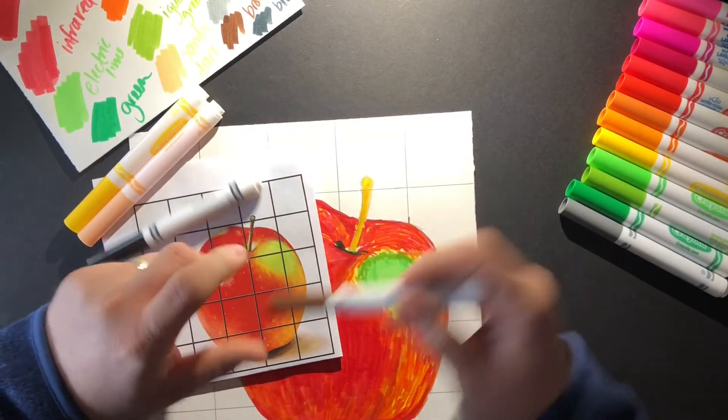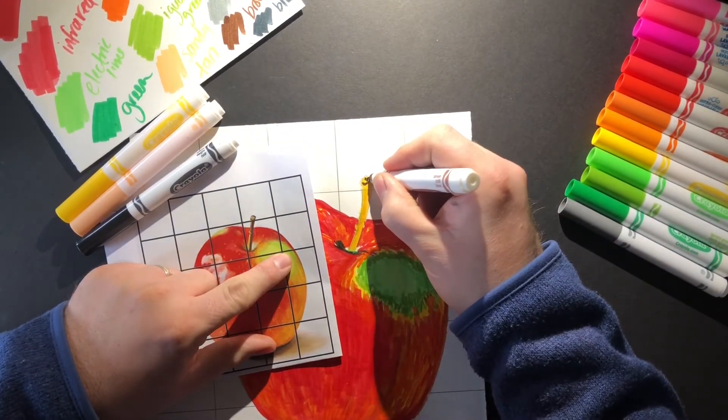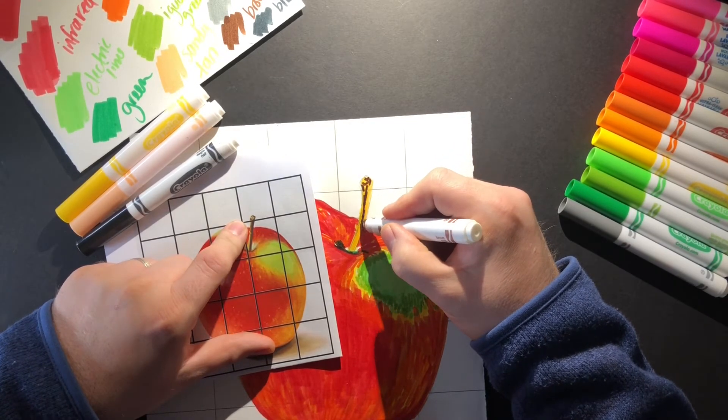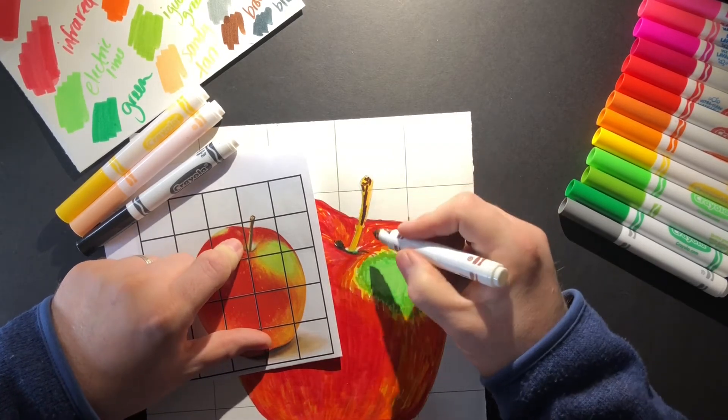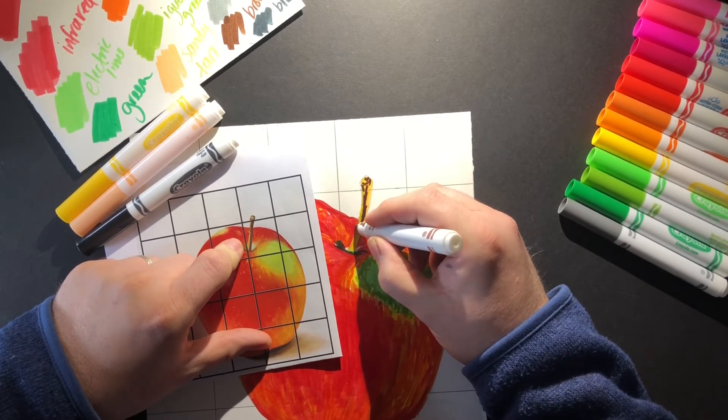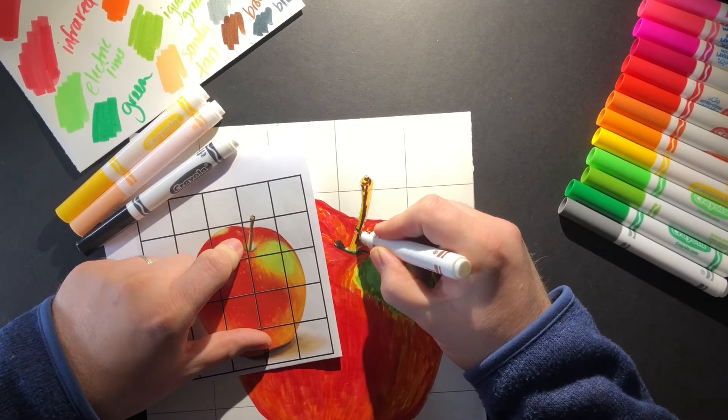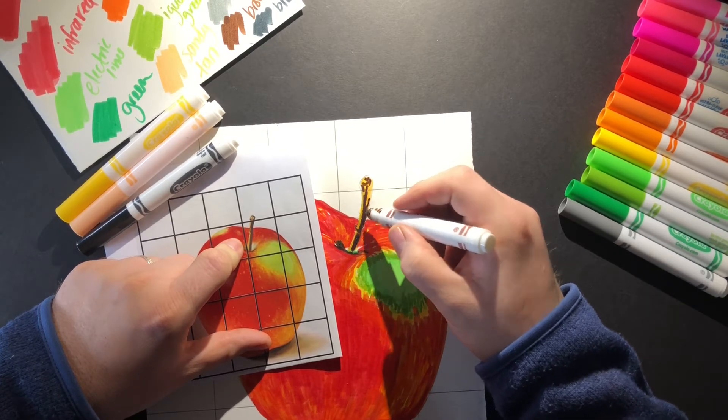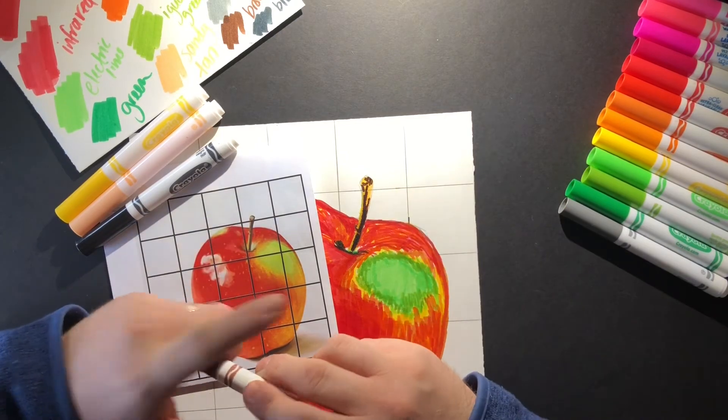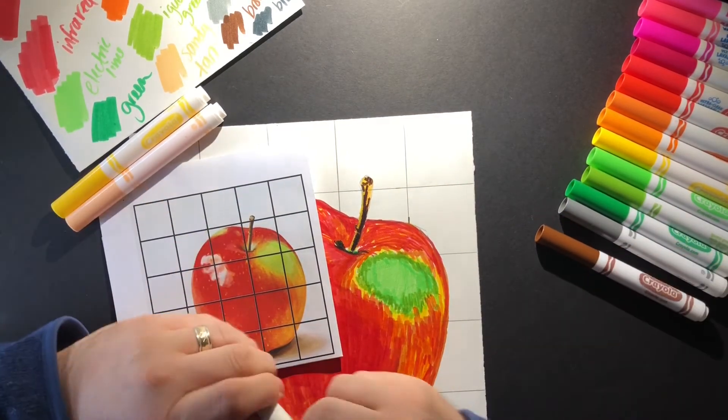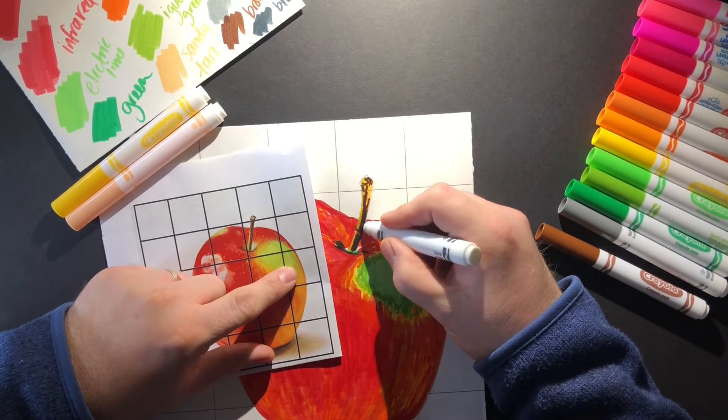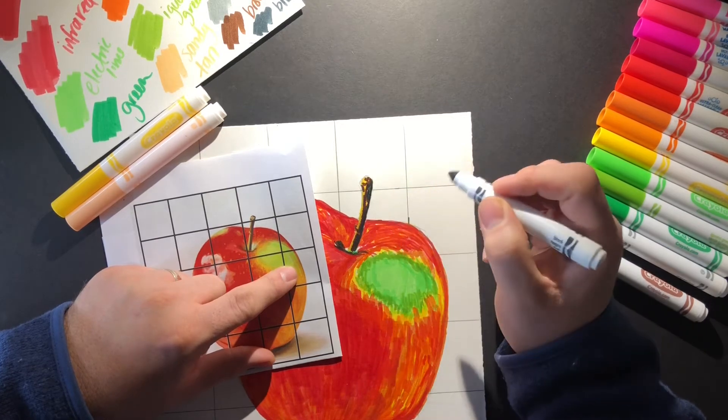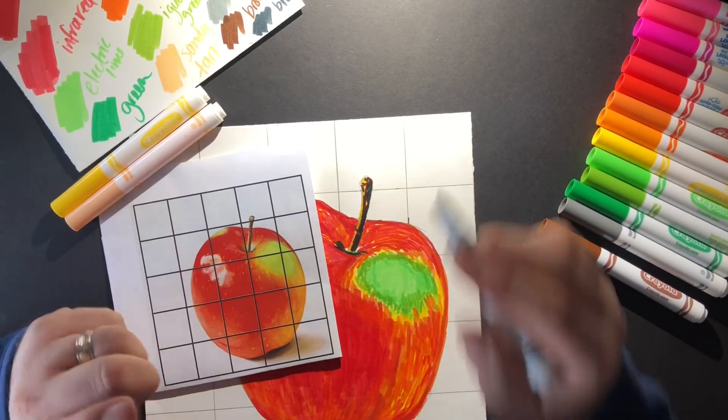Then I'm going to go back with my brown on the stem part. I'm trying to leave that yellow on the left side, which is where the light source is on the left side of the apple. And then finally, let me go back with some black, a little bit on the right. Just a little bit and that looks good to me, very simple.